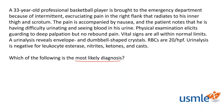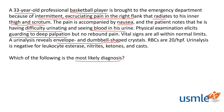Reading the question: a 33-year-old professional basketball player is brought to the emergency department because of intermittent excruciating pain in his right flank that radiates to his inner thigh and scrotum. The pain is accompanied by nausea, and the patient notes difficulty urinating and blood in his urine. Physical exam elicits guarding to deep palpation but no rebound pain. Vital signs are within normal limits. Urinalysis reveals envelope and dumbbell-shaped crystals, red blood cells at 20 per high power field, and is negative for leukocyte esterase, nitrates, ketones, and casts.